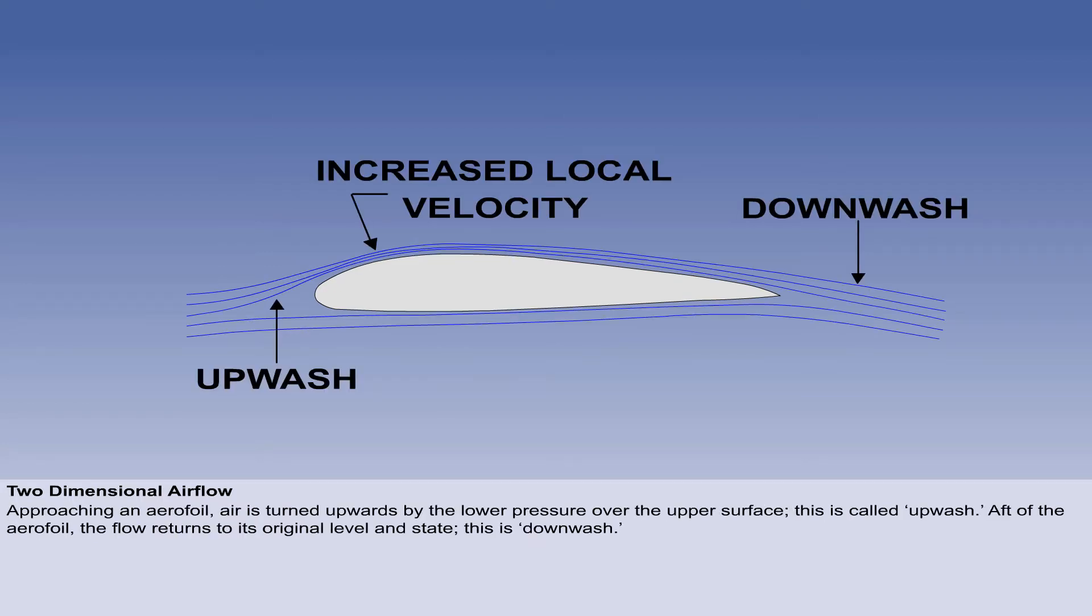As air flows towards an aerofoil, it will be turned upwards towards the lower pressure over the upper surface. This is termed upwash. After passing over the aerofoil, the flow returns to its original flow level and state. This is termed downwash.